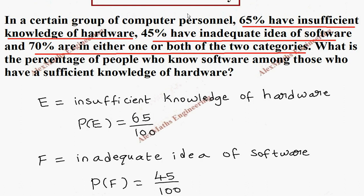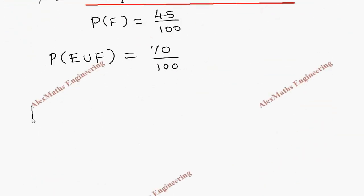Now, in the question, what they are asking us to find is: what is the percentage of the people who know software? We have taken F as inadequate idea of the software. But here they want who knows software. It means P(F dash) they want.